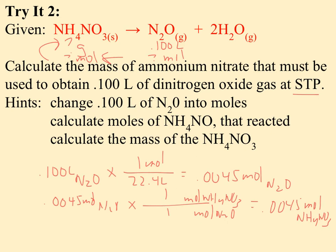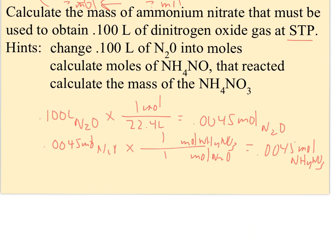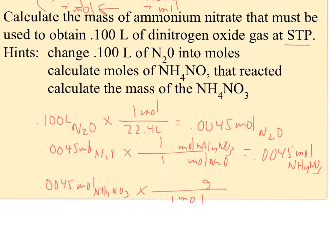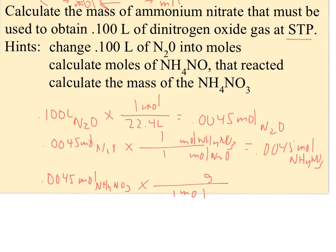The final step is to convert moles of NH4NO3 to grams using molar mass. We take 0.0045 moles of NH4NO3 and multiply by the molar mass of 80.06 grams per mole to get the mass of ammonium nitrate needed.